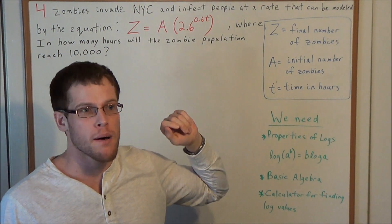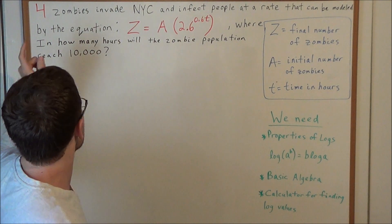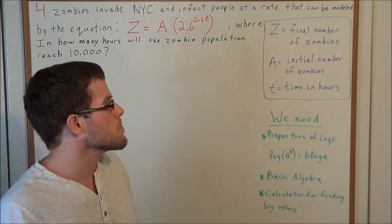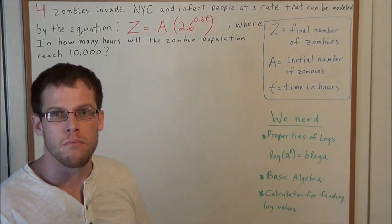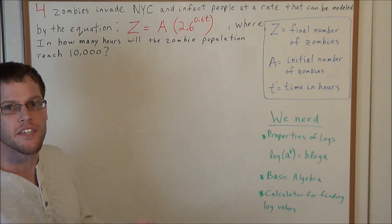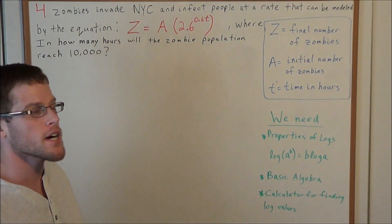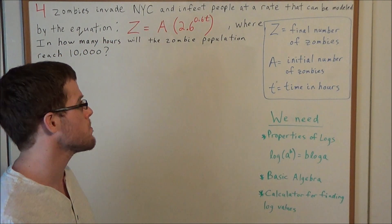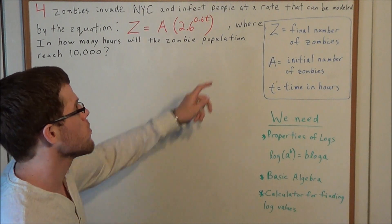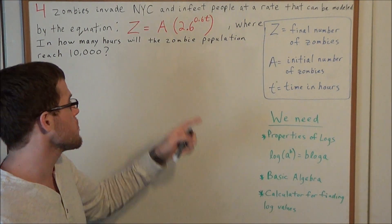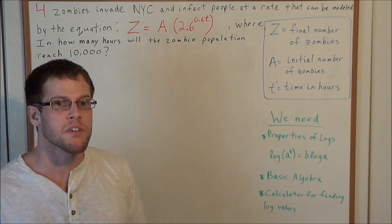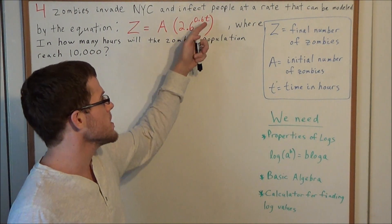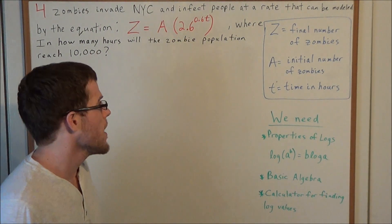In particular, I want to look at the problem: four zombies invade New York City and infect people at a rate that can be modeled by the equation z equals a times 2.6 to the 0.6t power, where z is the final number of zombies, a is the initial number of zombies, and t is the time in hours.